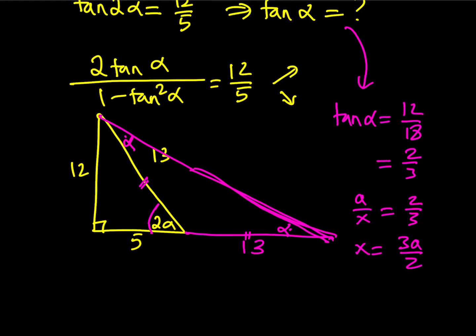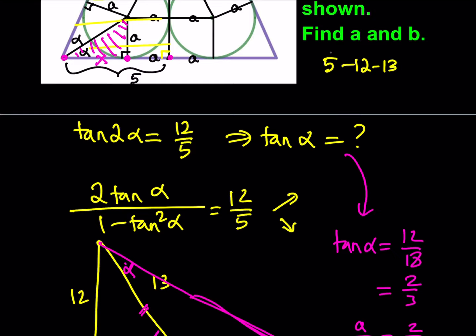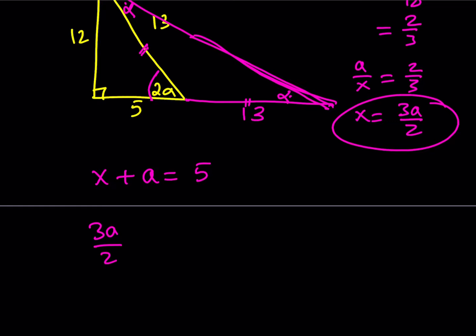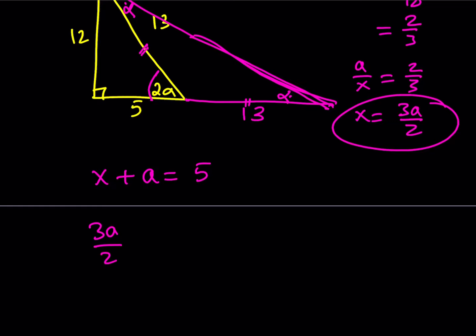So I was basically able to write x in terms of a, which helps because now notice that this length is 5, so x plus a is equal to 5. x can be written as 3a over 2 plus a is equal to 5. Let's multiply everything by 2, 3a plus 2a is equal to 10, and from here 5a is equal to 10, which means a is equal to 2.